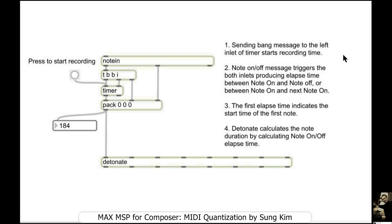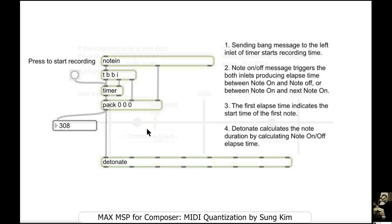Sending a bang message to the left inlet of the timer object starts the recording time. So when you start to play, the note on and off messages trigger both inlets, producing elapsed time. The first elapsed time indicates the start time of the first note. The next elapsed time is between note on and off, or between note on and the next note on messages.